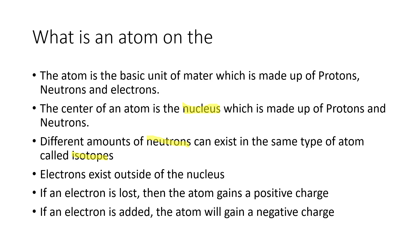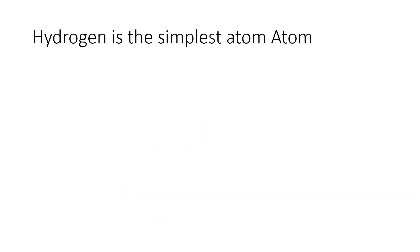Electrons circulate on the outside of the nucleus. They can sometimes be lost. If you lose an electron — which is negatively charged — you gain a positive charge. If you add an electron, you gain a negative charge. Remember, electrons are negative.